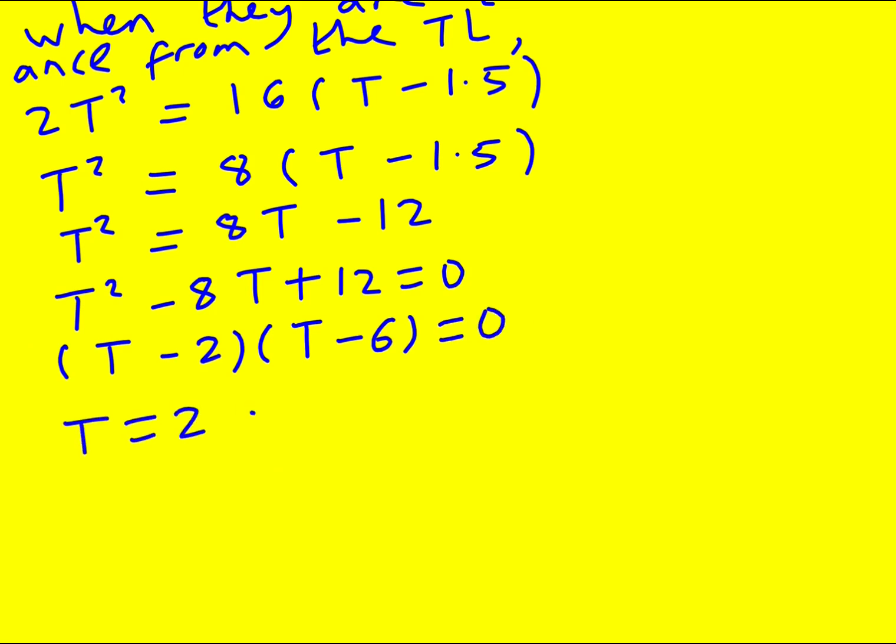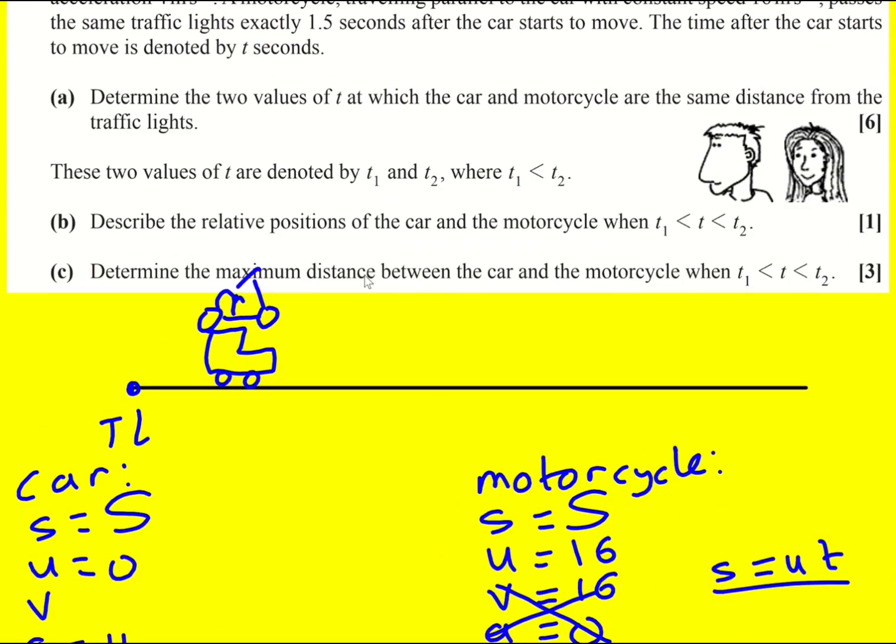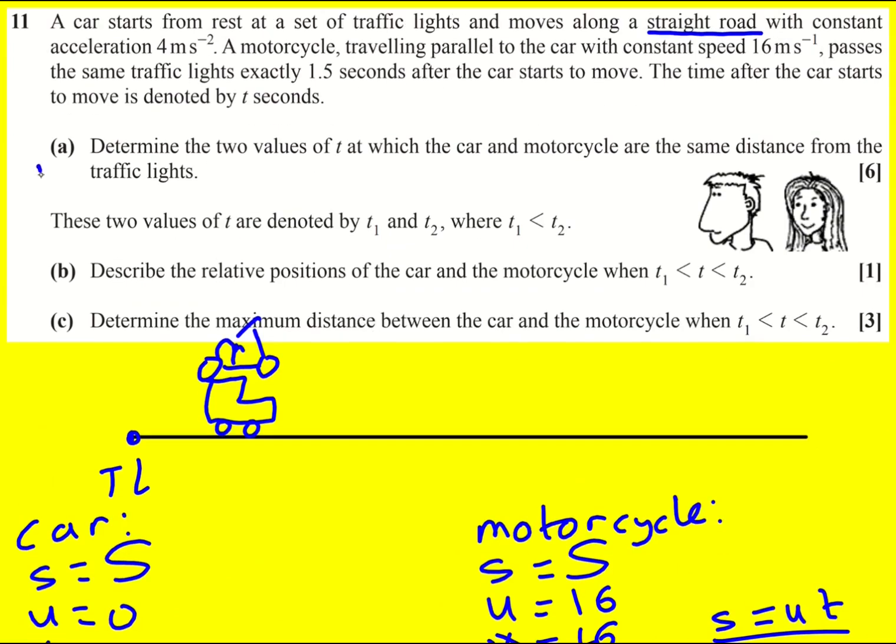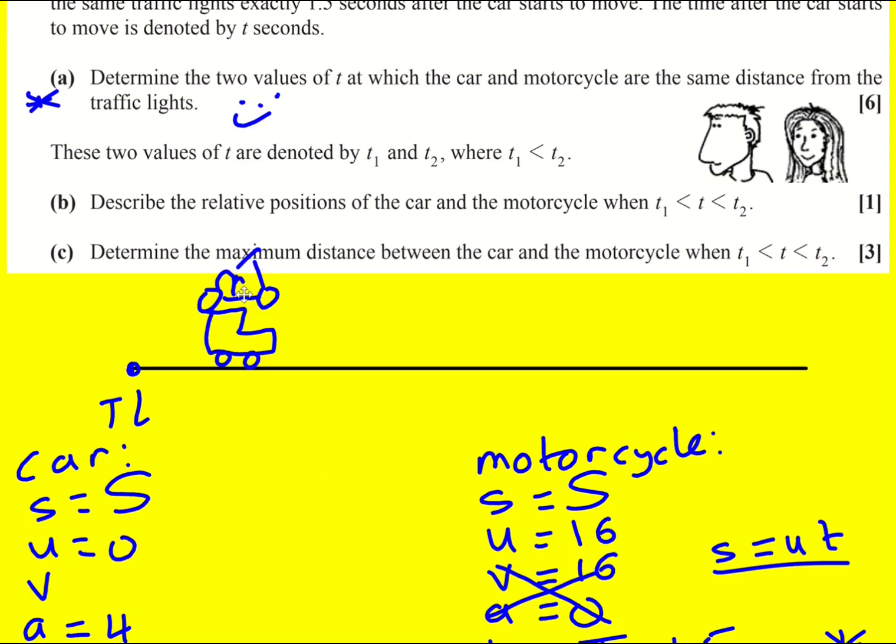And this factorizes minus 2 and minus 6. T equals 2 or 6 seconds. I think that's quite hard, personally, but I hope you're happy with that. That's the majority of the marks of this question. So now we've actually solved the equation. You might have solved that equation without actually having thought about what exactly is going on.